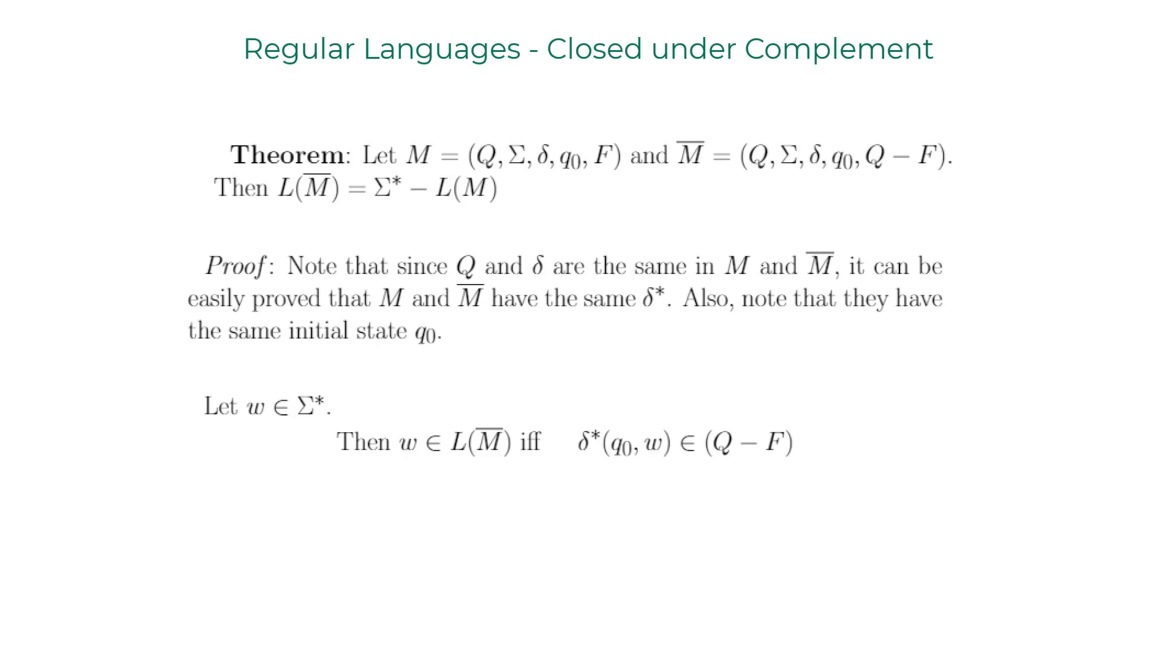W is in the language of M-bar if and only if delta star of Q0, W belongs to Q minus F. This is directly from the definition of M-bar. This is true if and only if delta star of Q0, W does not belong to F. We can rewrite this with a NOT operator where the contents in parentheses imply W belongs to the language of M. The NOT operator outside implies W belongs to sigma star minus L of M. We proved the theorem by sticking to the definitions.